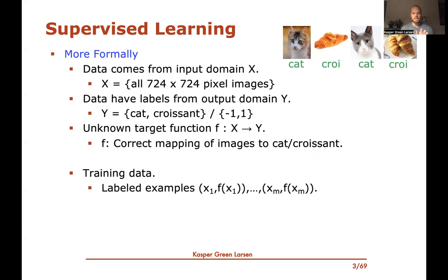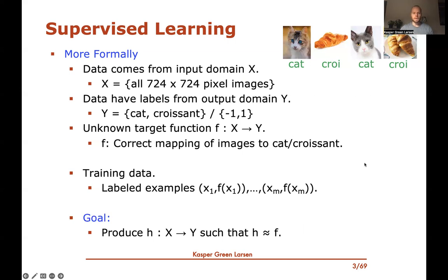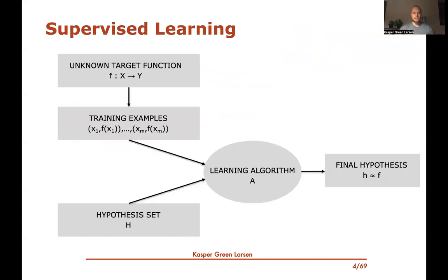The training data consists of m labeled examples: features x₁ through xₘ and corresponding labels f(x₁) through f(xₘ) — evaluations of the unknown target function f. The goal is to produce a hypothesis h, a mapping from the input domain to the labels, such that h is close to f — so that when you get new data, you can predict its label correctly.